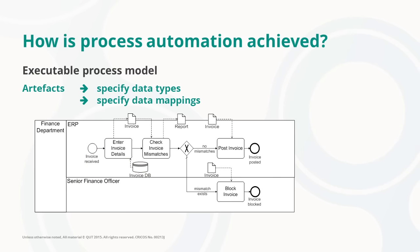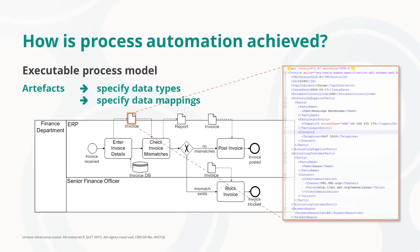As far as the artefacts are concerned, it's not enough to specify that there is a data object such as an invoice used as input to the activity entering invoice details. We do need to specify the data types for each of these data objects, and by data type we mean the electronic format in which this document can be represented.